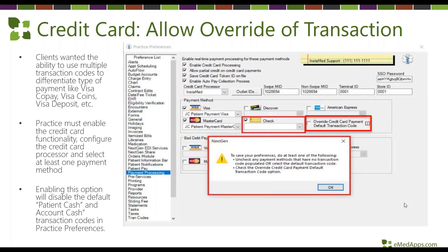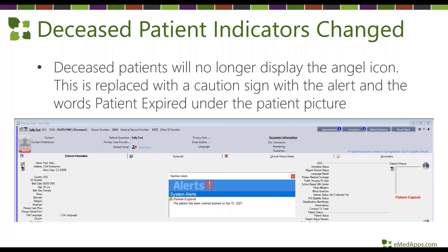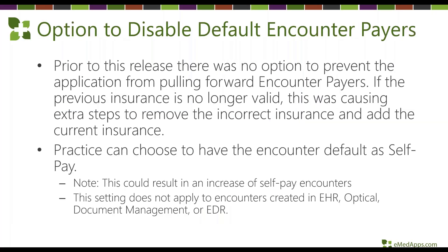For credit card transactions, larger organizations can now track visa copay versus visa deposit for reporting. If you have credit card integration in Next Gen, you can set up additional credit card transaction descriptions so at the time of payment posting you can select the appropriate item — though enabling this will disable the default patient cash and account cash. Next Gen has also removed the angel icon for deceased patients, replacing it with a 'Patient Expired' label under the patient picture and a caution alert indicating the date of death.